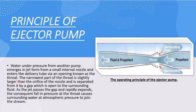Next, let's learn about the working of an ejector pump. An ejector pump works based on the Venturi effect. The Venturi effect is the reduction in fluid pressure that results when a fluid flows through a constricted section of a pipe. When water is forced through the narrow section of a pipe, it increases in velocity and there is a corresponding reduction in pressure in that region.